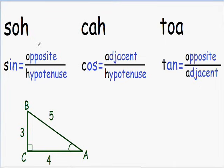You can do the same thing for the cosine equation. The cosine is equal to the adjacent over the hypotenuse. You can use the word CAH to help you remember that — the C stands for cosine, the A stands for adjacent, and the H stands for hypotenuse.